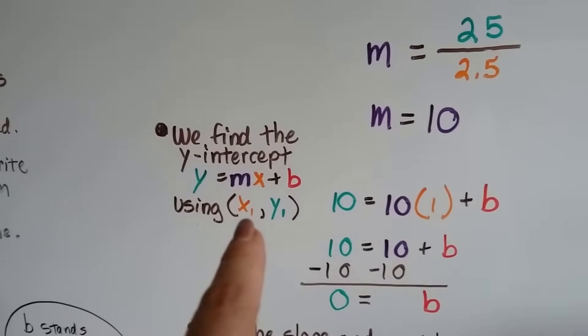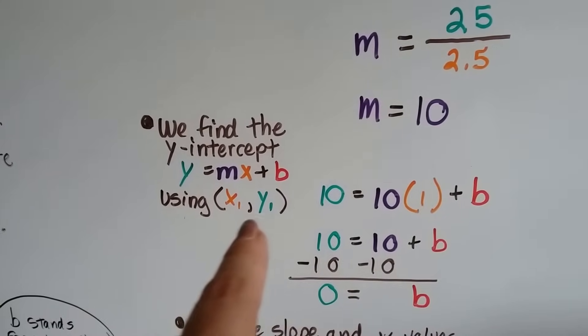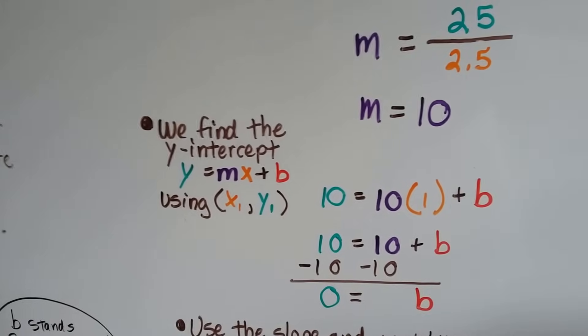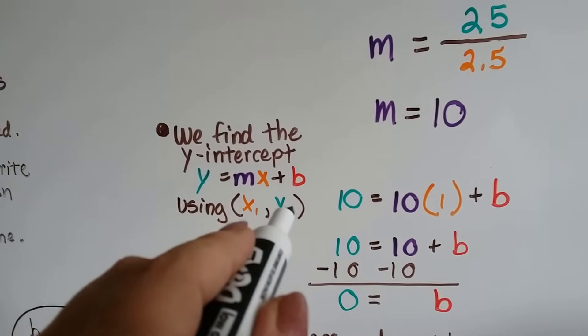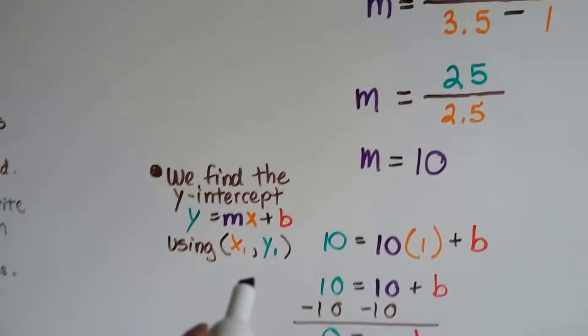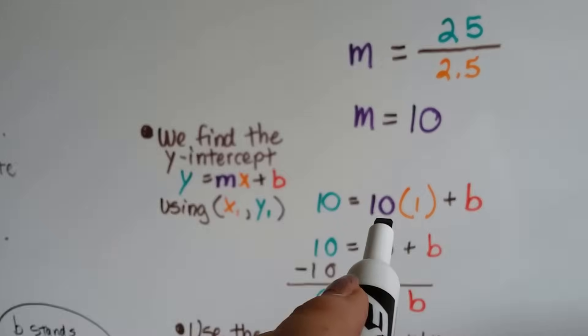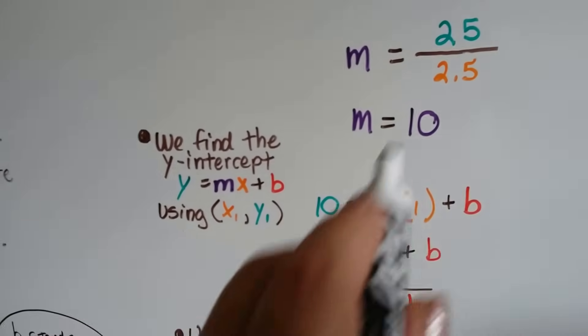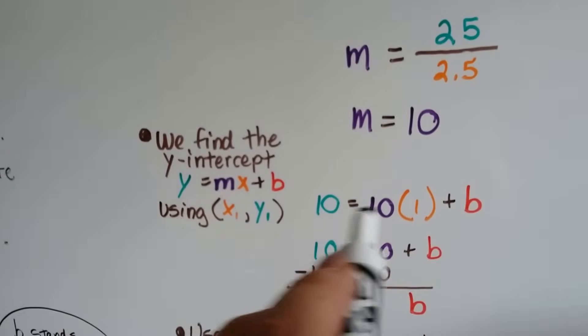So, that means, if we're going to plug those numbers in, then that means y1 is going to be 10. Because, remember, it's a 10. And, that's going to equal our slope of 10 that we got right here, the m. See? And, x1, you remember, was a 1. So, we're going to put that there.